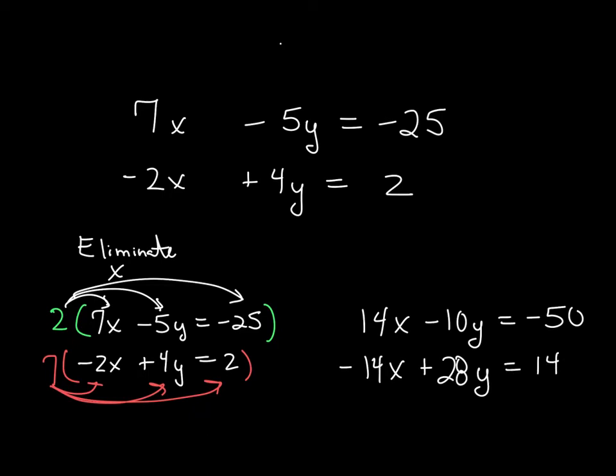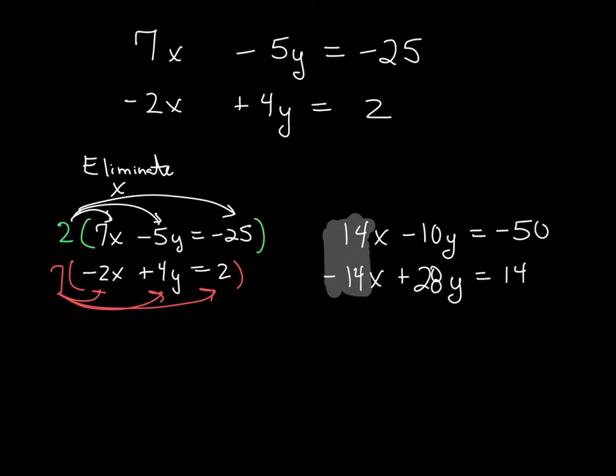The whole idea is that the coefficients of, in this case x, one is a positive of that value and the other one is a negative of that value. The reason we want to do that is because when I add those equations together, that becomes 0.